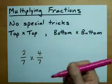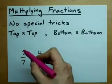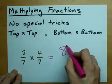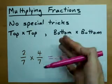Check it. 2 times 4. Top times top. 2 times 4 is 8. What goes on bottom?